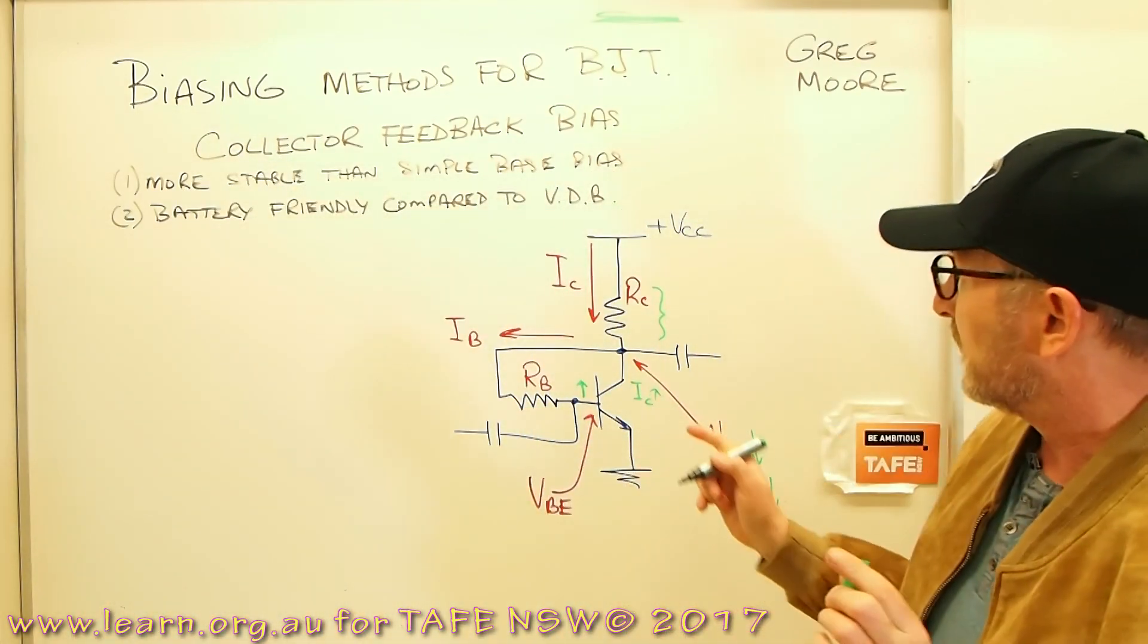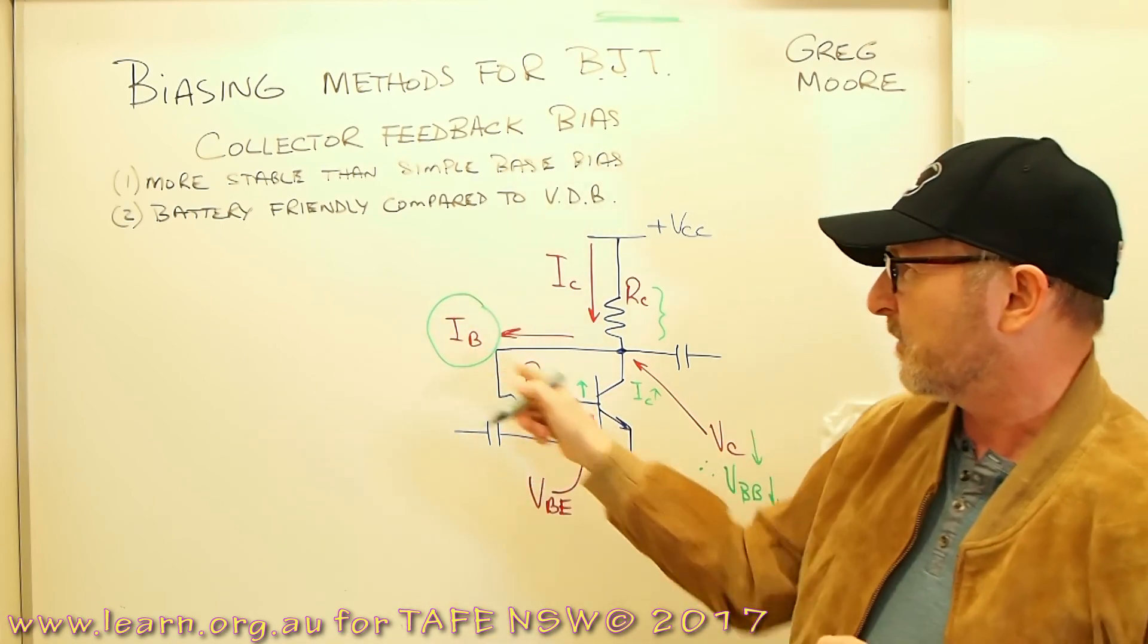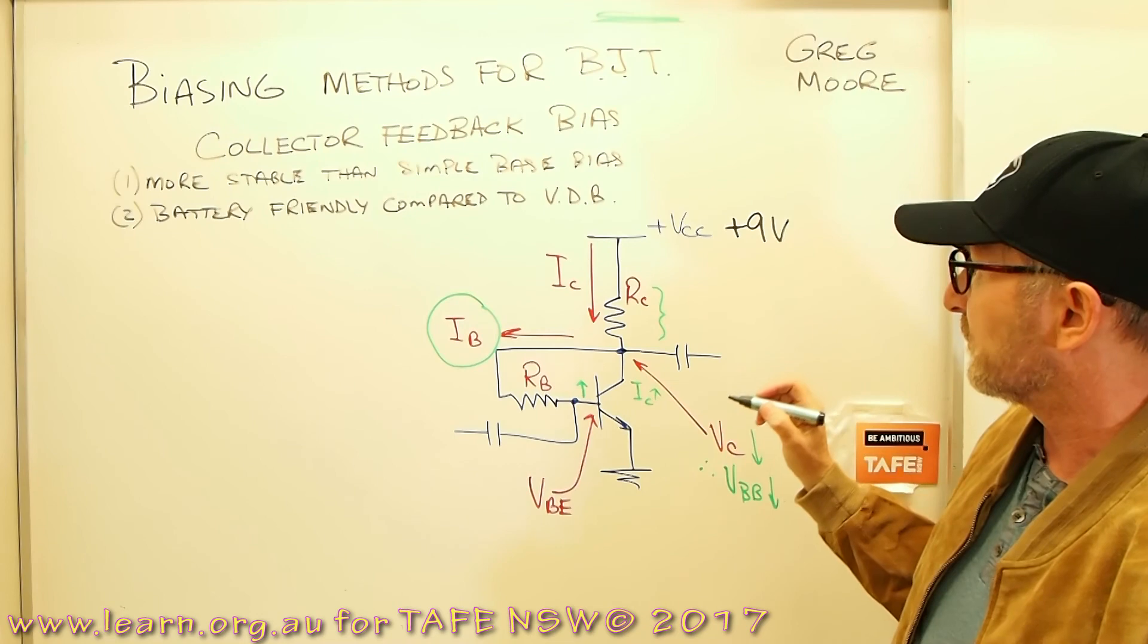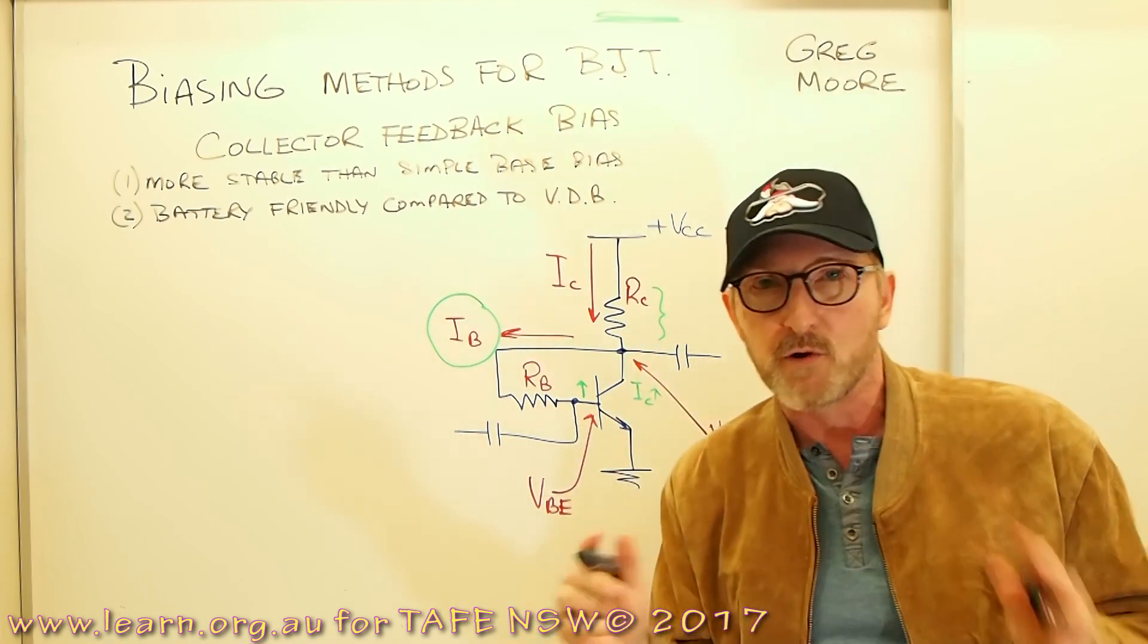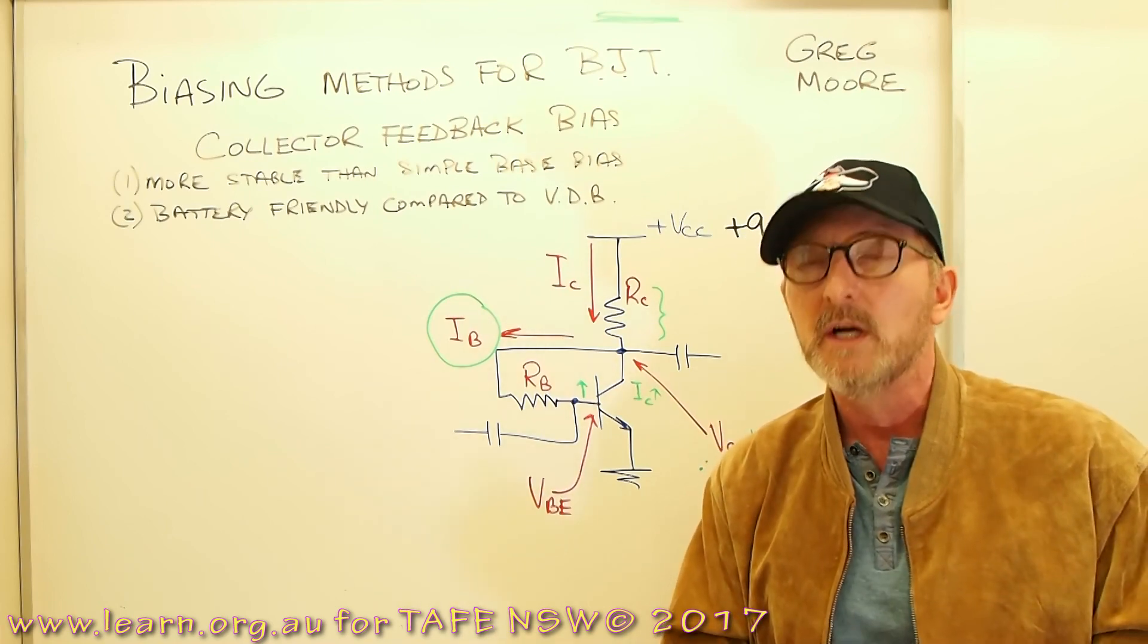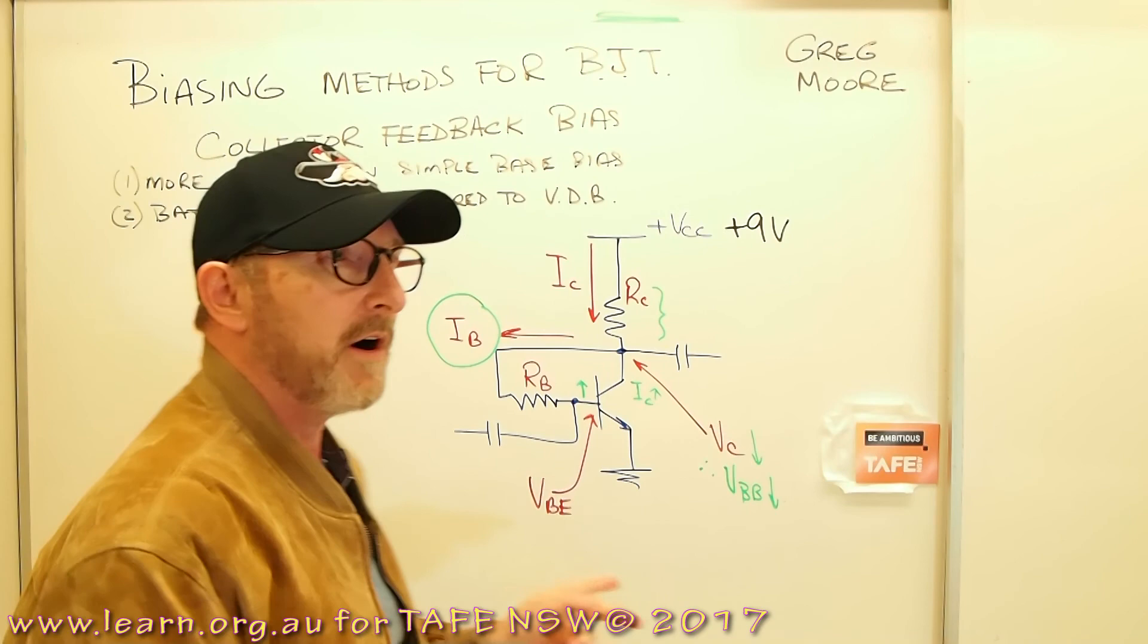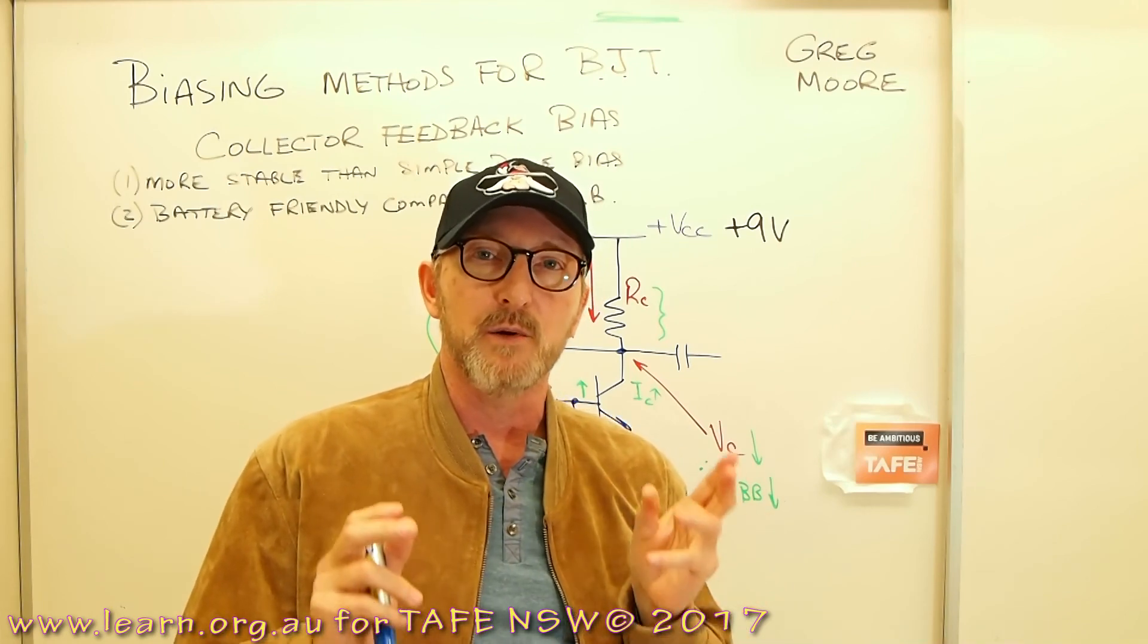But what about working out the actual base current for this transistor, IB? Working out IB for this is a little bit hard because we don't know what the value of VC is. Say for argument's sake we had VCC was given to us and it was plus 9 volts. But what about VC? We don't know what IC is and therefore we can't calculate the voltage drop across RC. We can't go too far with this unless we apply some mathematics to it. So a little bit of analysis comes into play here and a little bit of simple algebra. If I get this right we should be able to derive an equation that we can use to work out the value of base current in this transistor.